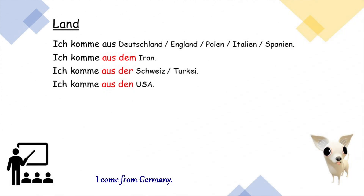And as for the country where you come from, I've listed a few examples. For countries which do not have an article, like Germany or Spain, you can say Ich komme aus Deutschland or Ich komme aus Spanien. And for countries which have articles, like Iran, Switzerland, Turkey, or the USA, you would say Ich komme aus dem Iran, Ich komme aus der Schweiz, Ich komme aus den USA. There's no other way but to memorize which countries have articles and which do not.